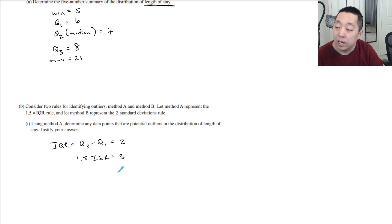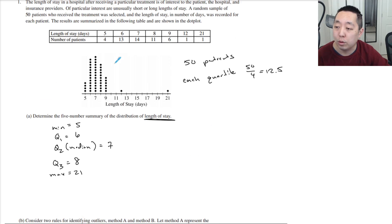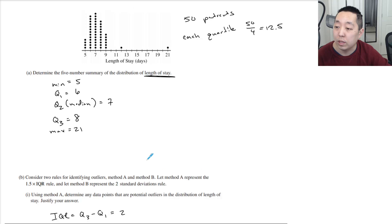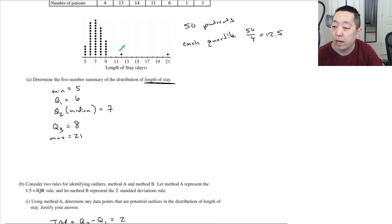1.5 times two is three. And so we're basically looking at anything that is beyond three, beyond Q3. So if I look at the bounds, if I do Q1 minus 1.5 IQR, it's going to be three below the Q1, which would be six minus three, which is three. And if I look at 1.5 IQR above Q3, it's going to be eight plus three, and that's equal to 11. So anything outside of the range three to 11 would be considered an outlier. And that means these two are outliers because I have a 12 and a 21.